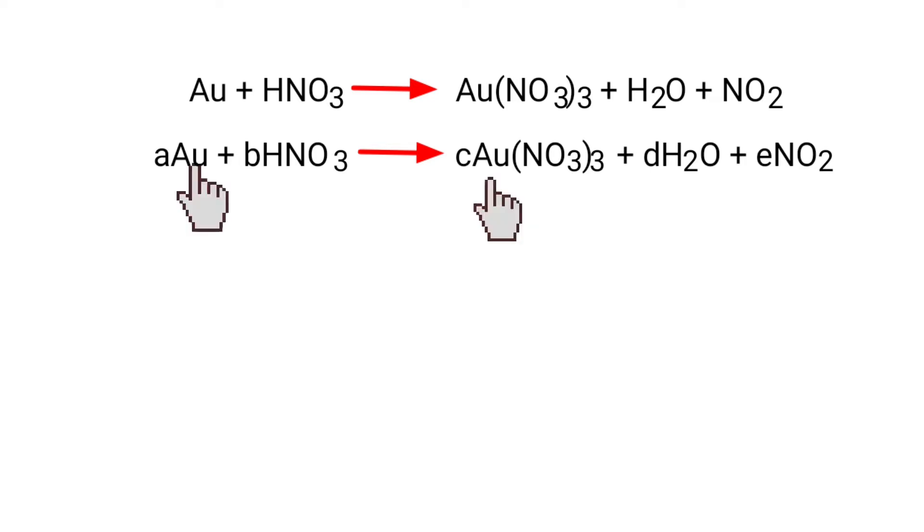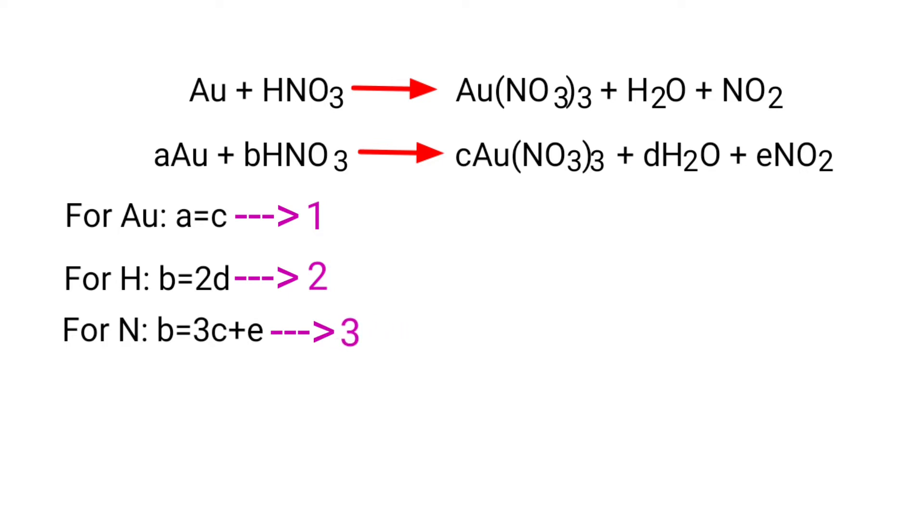For gold, a equals c. For hydrogen, b equals 2d. For nitrogen, b equals 3c plus e. For oxygen, 3b equals 9c plus d plus 2e.